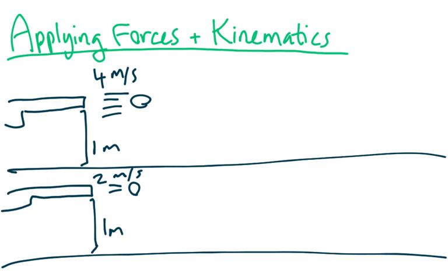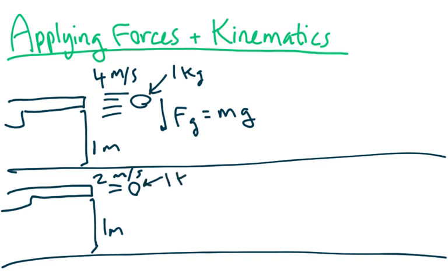Meanwhile, in the vertical direction, there's obviously a net force. This is going to be the force of gravity, equal to mg, and m is the mass. We're going to call this one kilogram to keep it simple, and this one is also one kilogram, because the only difference is the velocity. So this equals one times gravity acceleration, which we'll approximate at ten meters per second squared, giving us a force of gravity equal to ten newtons.